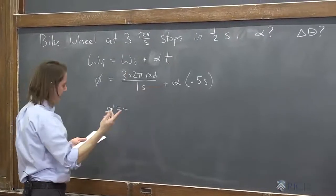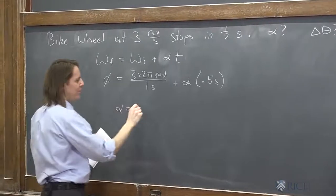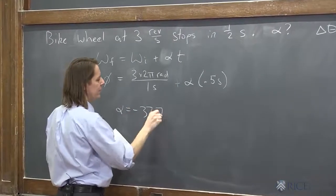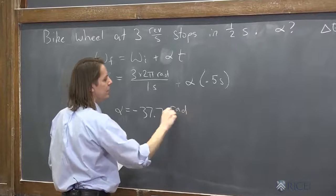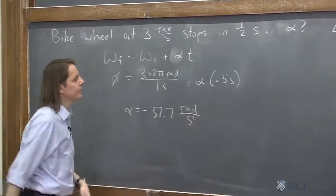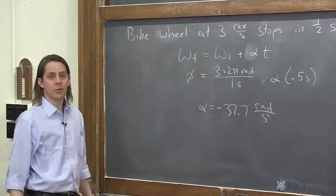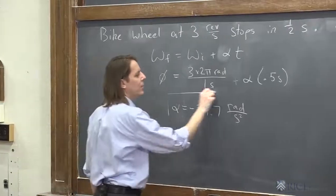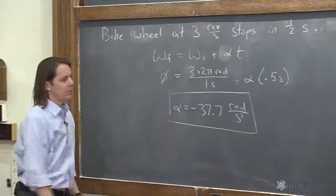Alpha is going to be negative 6π divided by 0.5. It comes out numerically to minus 37.7 radians per second squared. So there's your angular acceleration. Exactly like what you would have done in a translational problem.